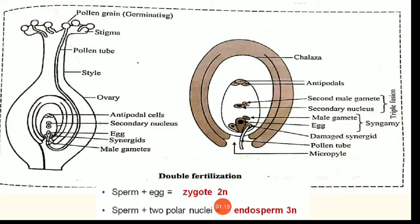Ab is process ko pehle detail mein padhte hain. Pehle chahungi ki jo hai — yeh characteristic feature of angiosperms hai — isko discover kiya tha Navas chin ne, 1898 mein, aur konsi flowers mein kiya tha: Lilium and Fritillaria species pe gaya tha. Yeh bahut zyada important question hai, bahut baar aata hai MCQs mein, isliye socha aapko batau.